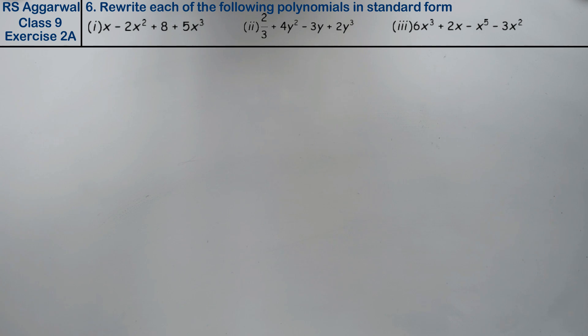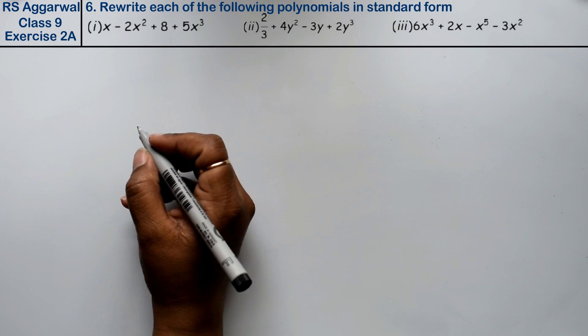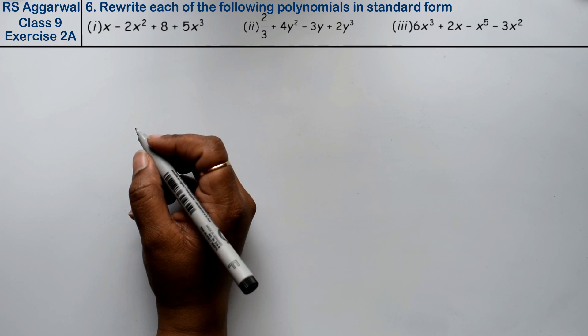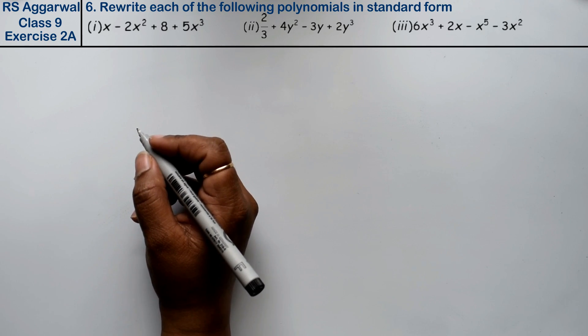Let's do question number 6 of exercise 2a, that is polynomial. Question number 6 is: rewrite each of the following polynomials in standard form.